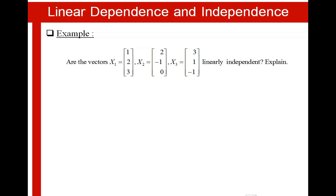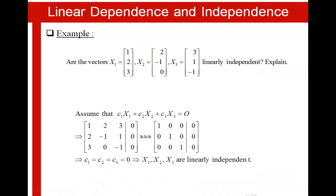We know that these three vectors, being the coordinate vectors, each of them has its own direction and they are not on the same line of action. Another example: are the vectors X1, X2 and X3 in R3 linearly independent? In order to answer the question, we must apply the definition. Assume that C1·X1 plus C2·X2 plus C3·X3 equals 0, where C1, C2 and C3 belong to R.